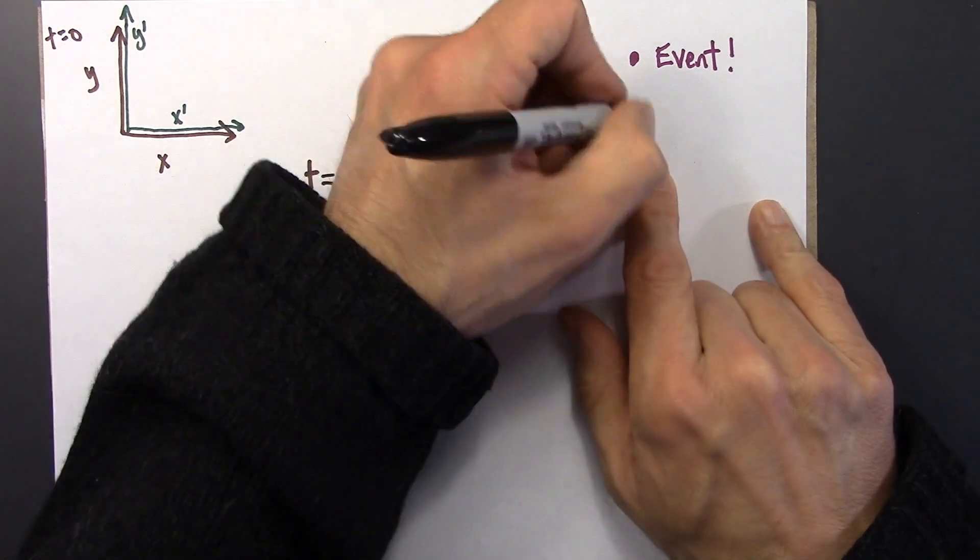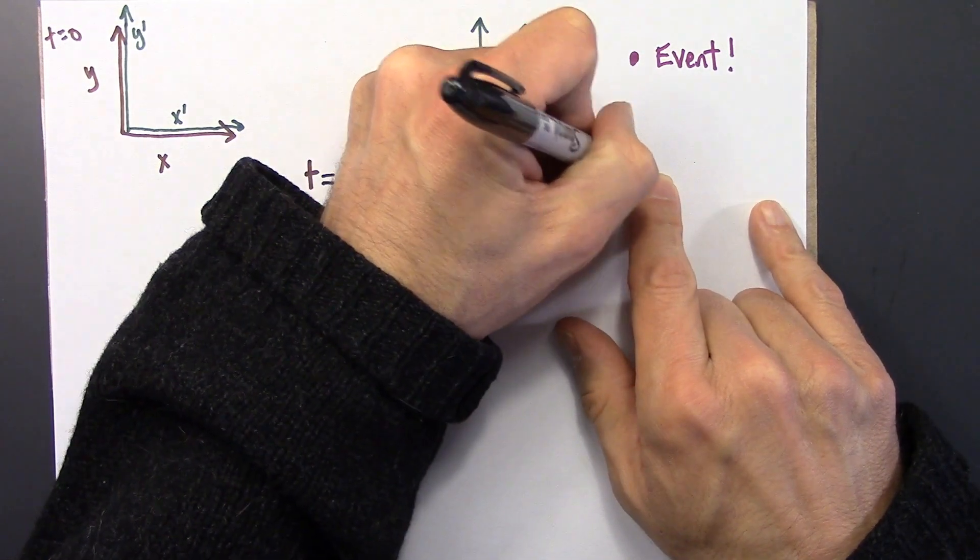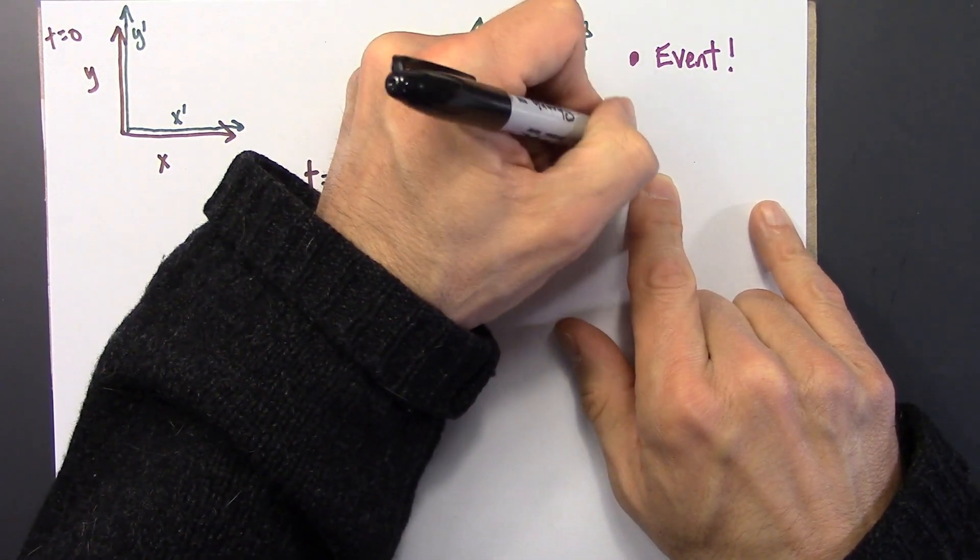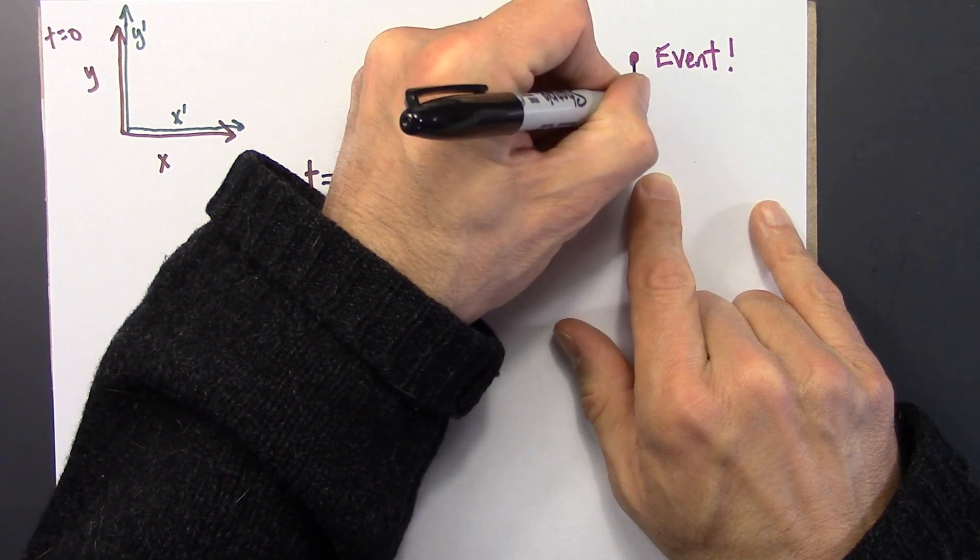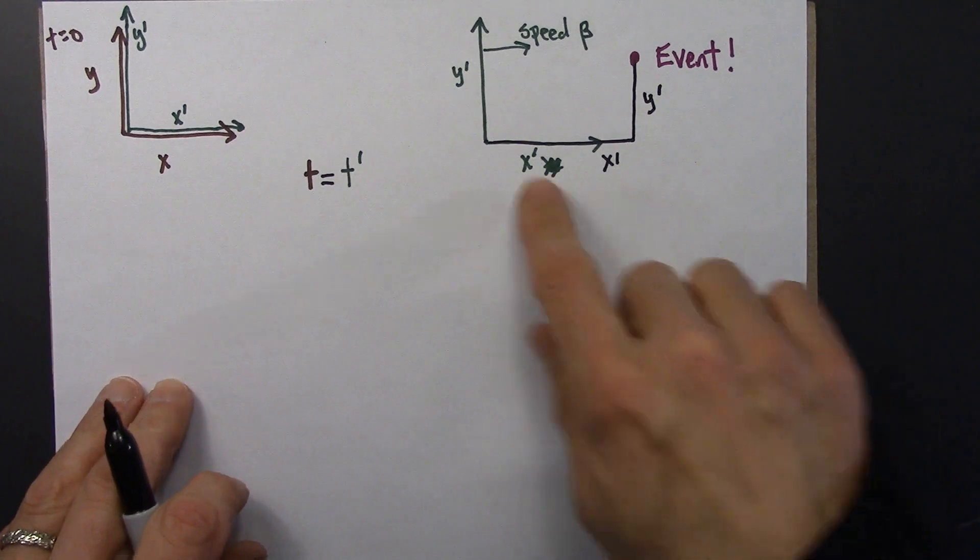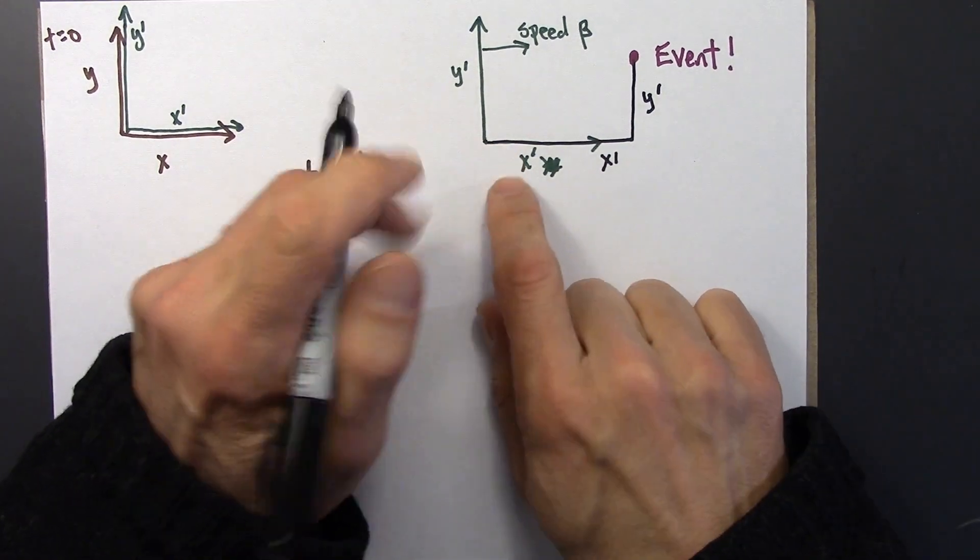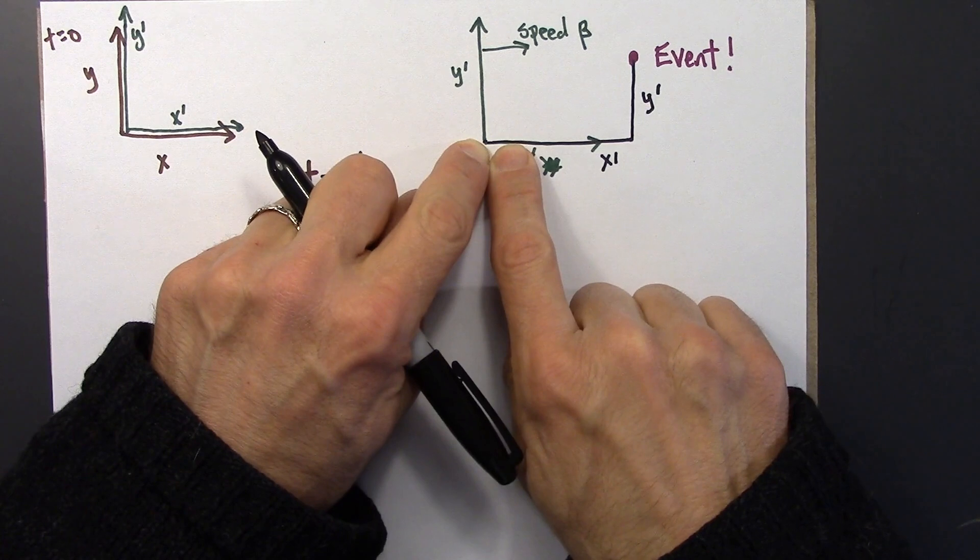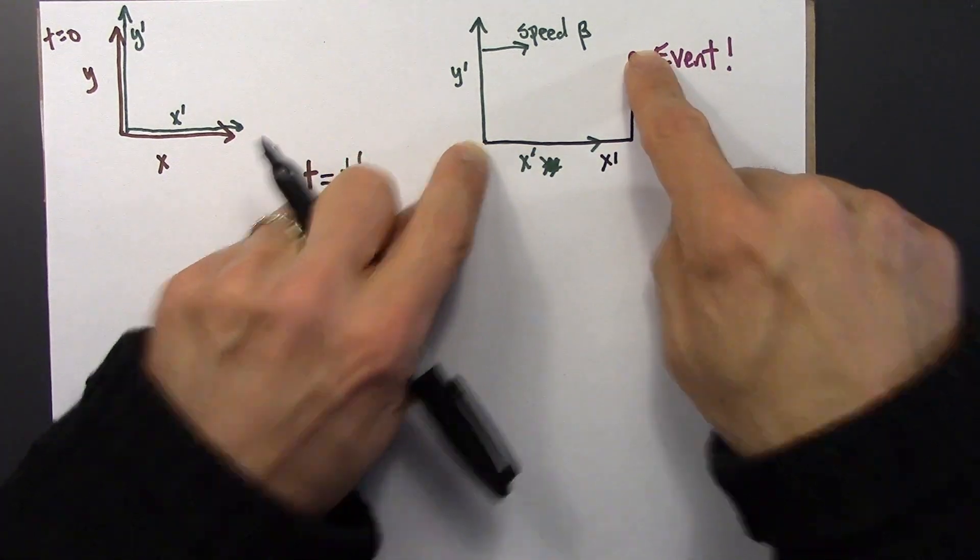So this would be x prime for that event, and this would be y prime. Alright, we're measuring from the origin of this reference frame at the time when this event occurs.